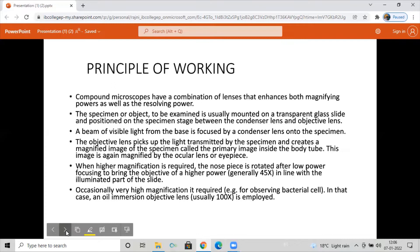When higher magnification is required, the nose piece is rotated after low power focusing to bring the objective of a high power, generally 45x, in line with the illuminated part of the slide. Occasionally very high magnification is required, for example for observing bacterial cell. In that case, an oil immersion objective lens, usually 100x, is employed.